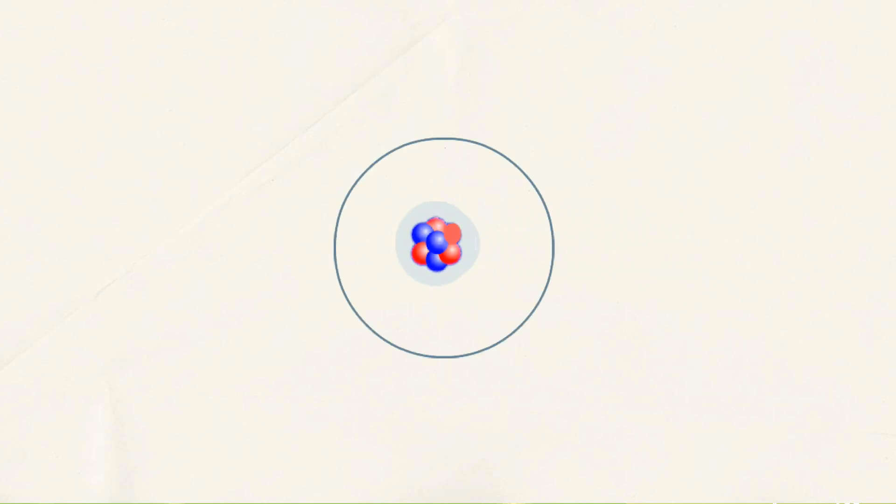Atoms are made up of a nucleus and electrons. These electrons move around the nucleus of the atom. Electrons are arranged in different shells around the nucleus as seen here. Each orbit is associated with a definite amount of energy, and therefore called energy shell, or energy level.